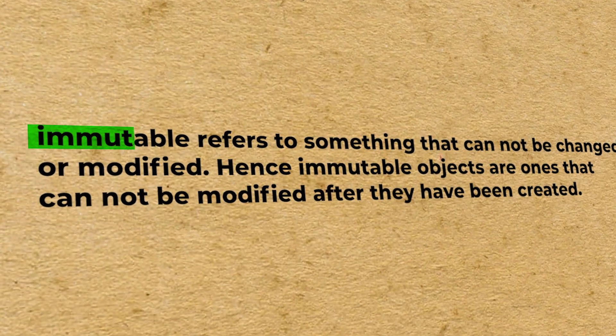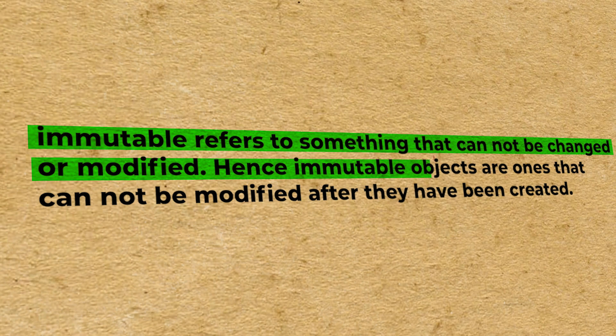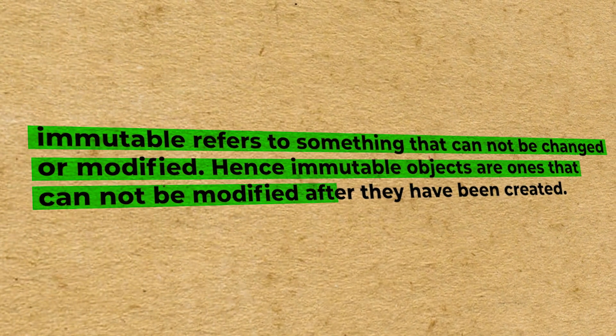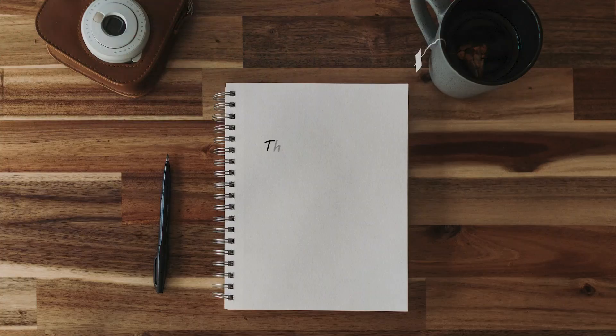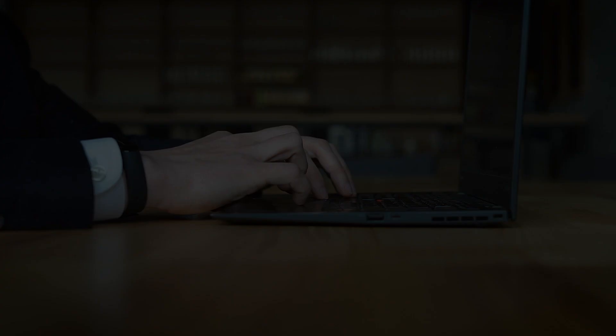So first of all, let's understand what we mean by an immutable object and why it is required in the first place. Immutable refers to something that cannot be changed or modified. Hence immutable objects are ones that cannot be modified after they have been created. This is an object whose internal state does not change after it has been created completely. It assures us that it will behave in the same manner for the rest of its life cycle.